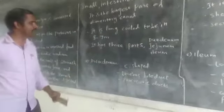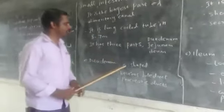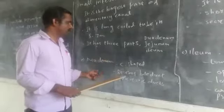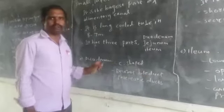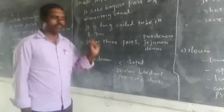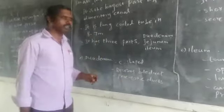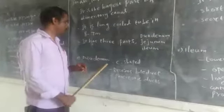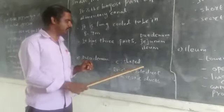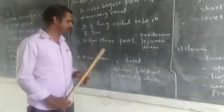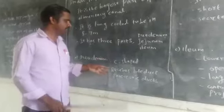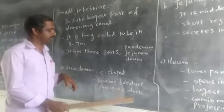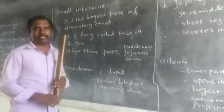First, you can see the duodenum. Duodenum is C-shaped. It receives the bile duct from the liver and it receives the pancreatic duct from the pancreas.